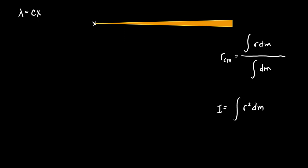A couple things to consider before we start: the units of C. This has to be a mass density, so lambda will have units of kilograms per meter. Since we're multiplying by something in meters, C has to be kilograms per meter squared. That's all you really need to know — it's just a constant — and it describes how quickly the mass increases as you move to the right.